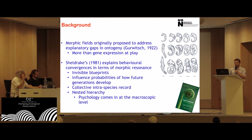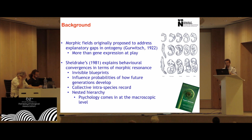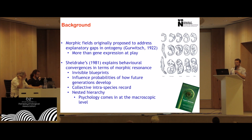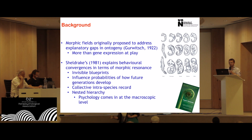In terms of the background of the theory, morphic fields were first proposed by Gerwitz in the 1920s to account for explanatory gaps in the ontogeny of species — in other words, trying to account for how certain species develop from a single undifferentiated cell into complex organisms with multiple specialized cells. It's considered among many that epigenetics or gene expression is insufficient to account for how that happens, so a morphic field theory was proposed to try and explain that.